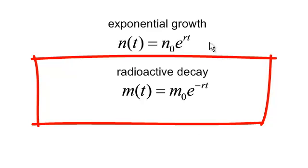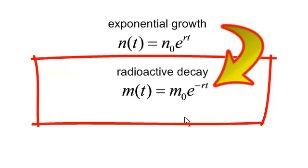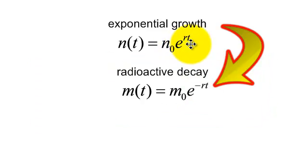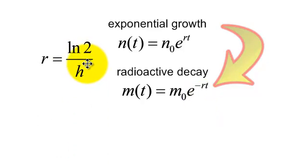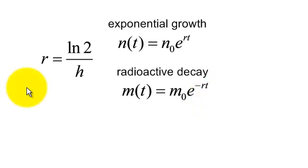Radioactive decay, very similar formula, M-naught, how much do I have at the beginning? The only difference is, notice this, this R is positive and the decay is negative. And sometimes we refer to this R as being the natural log of 2 over H.